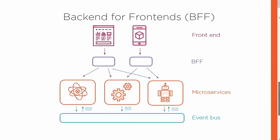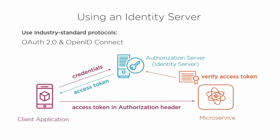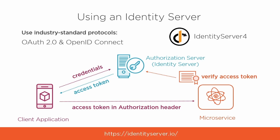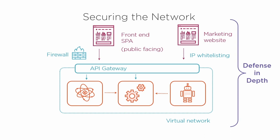Microservices is a style of architecture where you create autonomous, independently deployable services that collaborate together to create a software application. Microservice architectures are popular because they allow us to build applications that scale, perform well, and enable us to adapt quickly to changing business requirements.